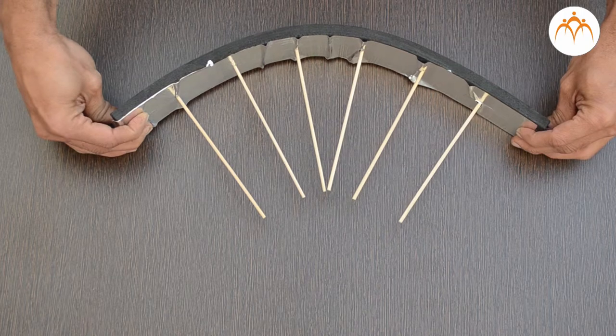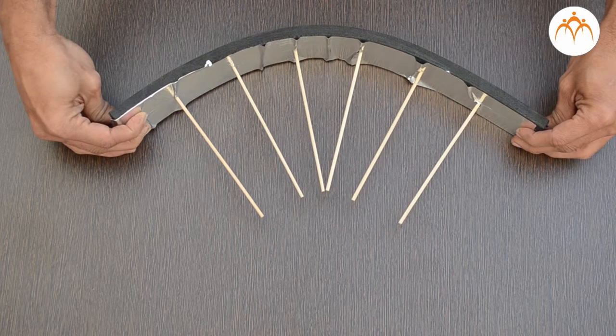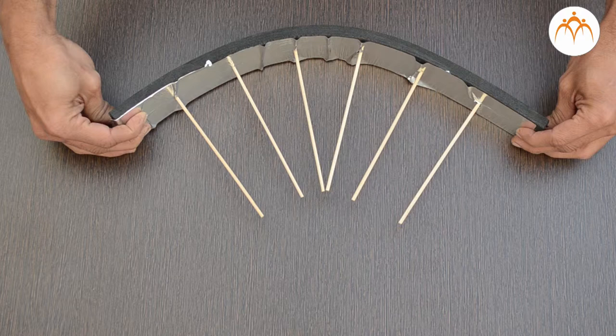If we bend the rubber piece inward, it looks like a concave mirror. Observe how all sticks converge or meet at a point. A concave mirror is also called a focusing mirror.